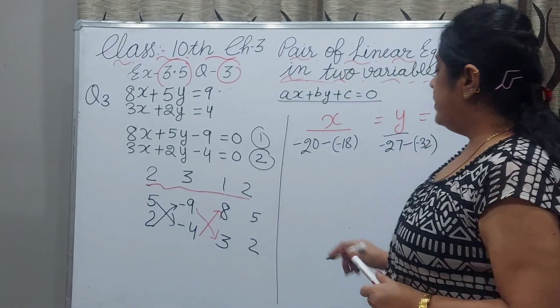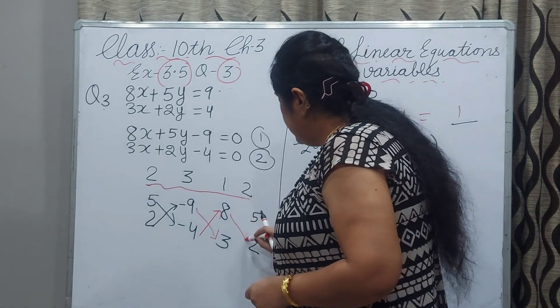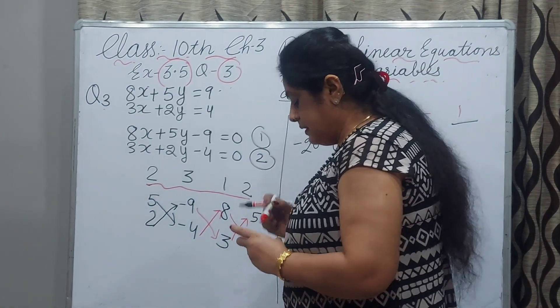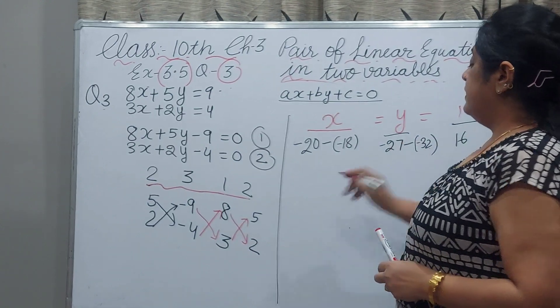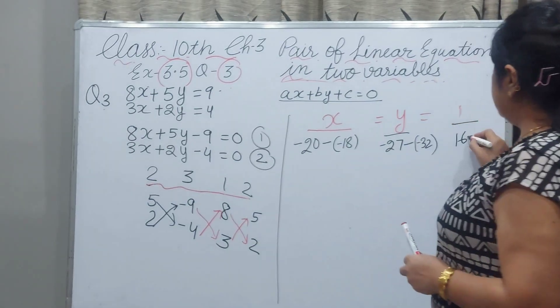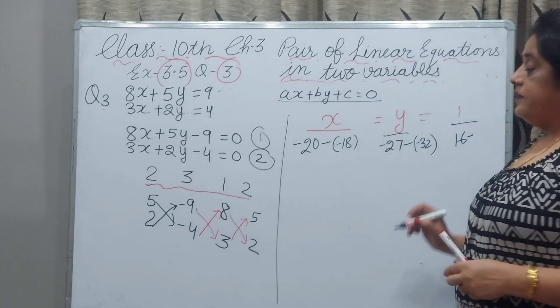For the value of 1, cross multiply. 8 by 2, 16, and between minus sign, and 5 times 3 is 15.